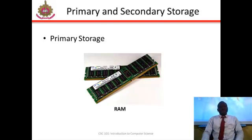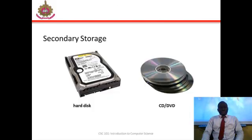Now secondary storage is an optional attachment to the CPU. Is non-volatile unlike the primary storage which is very volatile. Then it is a permanent form of storage. Examples include hard disk, floppy disk or CD or DVD as shown to you on your screen right now.